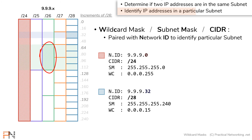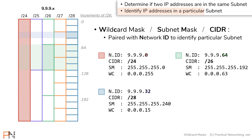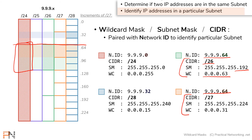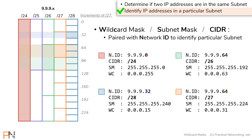To refer to a particular slash 26, I pair the network ID 9.9.9.64 with that CIDR, subnet mask, or wildcard mask. Keep in mind that the network ID itself is not enough — you must pair it with one of these three things. A network ID of 9.9.9.64 paired with CIDR slash 26, subnet mask ending in 192, or wildcard mask 0.0.0.63 refers to a chunk of 64 addresses, whereas paired with the CIDR, subnet mask, or wildcard mask for a slash 27 you'd only be referring to 32 addresses. This is the second function of wildcard masks — identifying a particular subnet.